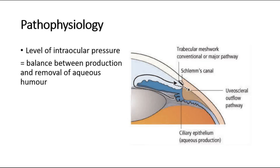This aqueous humor will then leave the eye mainly via the trabecular meshwork, Schlemm's canal, and the episcleral veins, and then reach the bloodstream. This pathway is known as the conventional pathway. There is also a small proportion of aqueous humor — around 4% — that drains across the ciliary body into the suprachoroidal space and is absorbed into the venous circulation.